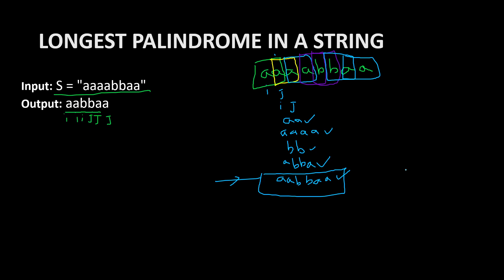I hope you have understood the approach. In the even case and the odd case there is only a small difference. In the even case, we take i and j at two separate adjacent positions. But if the palindrome is odd length — for example A, B, A — i and j will start at the same position. So in even length, i and j start as left and right middle elements, but in odd length, both i and j start from the same middle position. After seeing the code, I hope any remaining doubts will be clear.